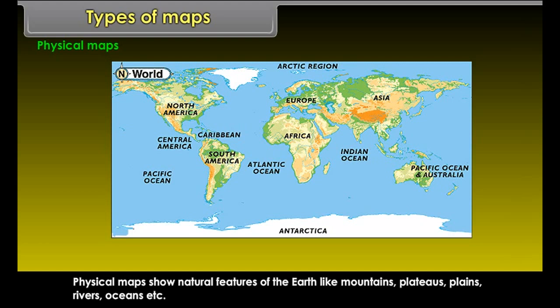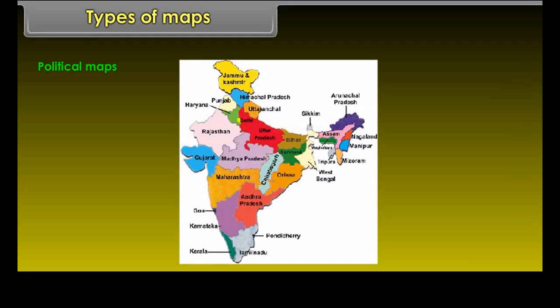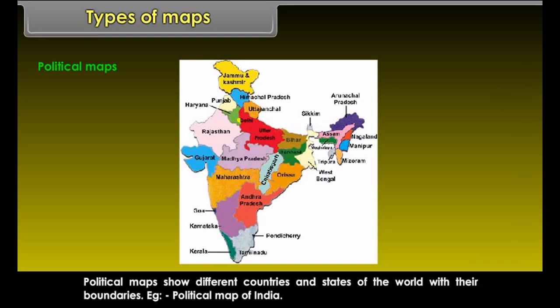Physical Maps show natural features of the earth like mountains, plateau, plains, rivers, oceans, etc.